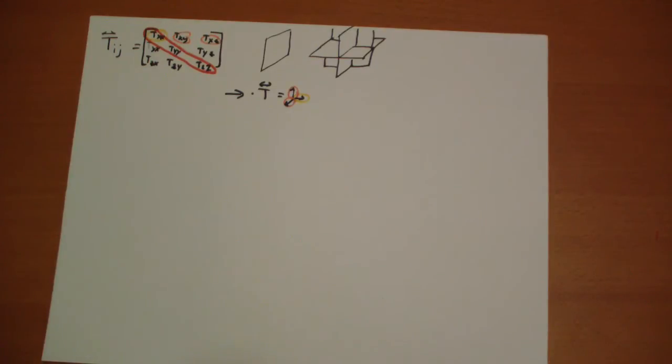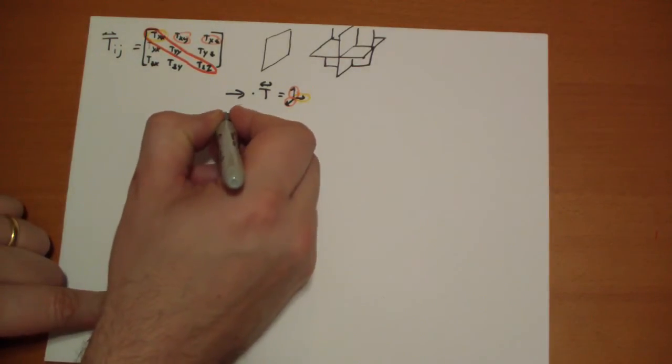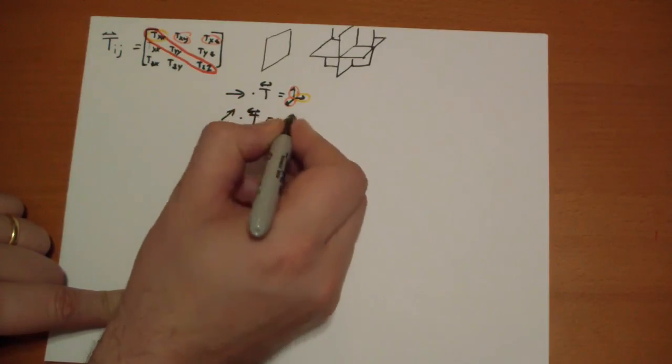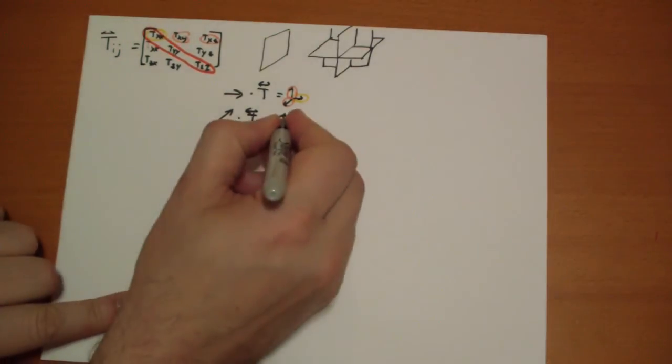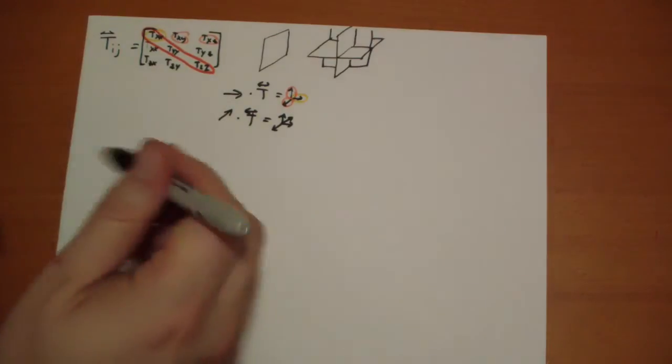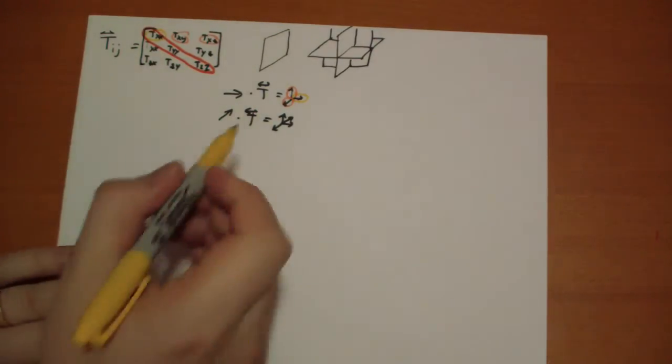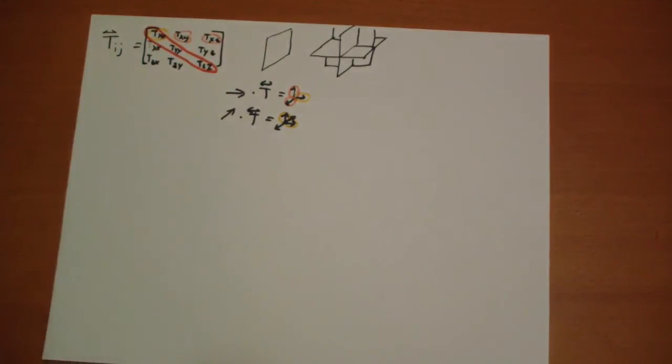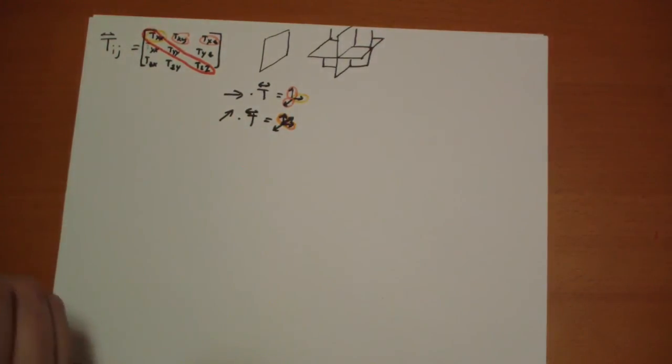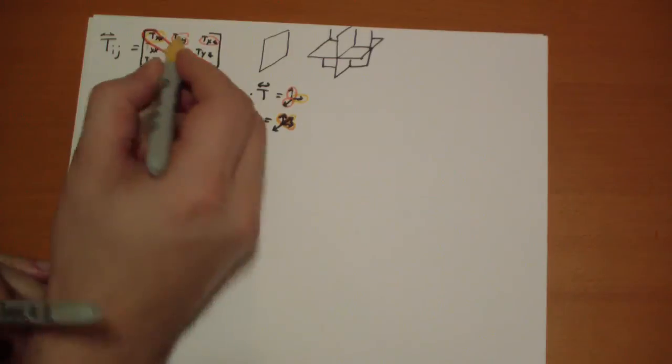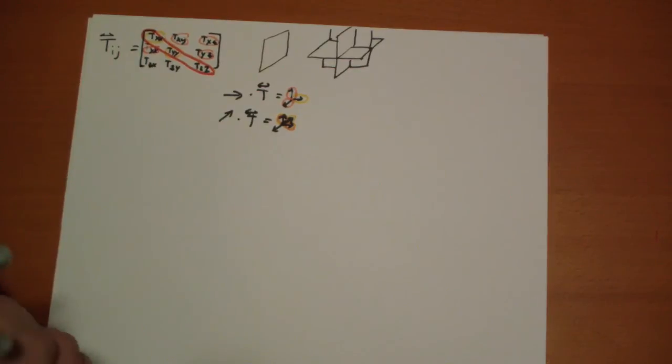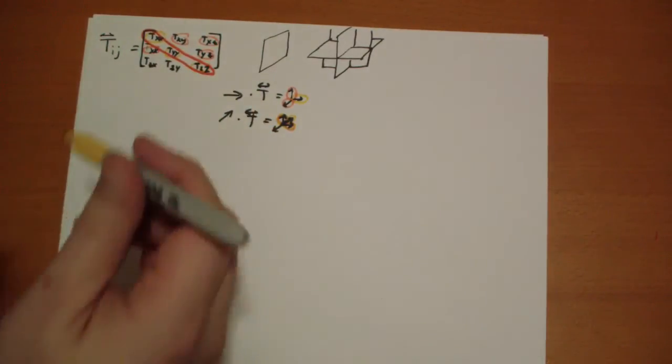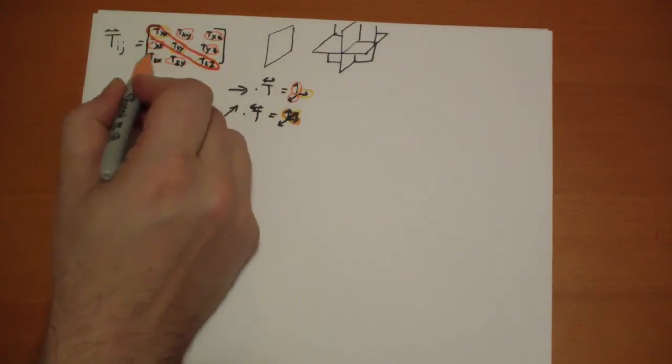Now if I took another vector, say a vector pointing in the y direction, again I'm going to get a vector with three components. Two of these components are perpendicular to the vector you gave it, and one of them is parallel. The parallel is this one, and these two are perpendicular. And the same thing for the z: if you put in a z vector, you get back a parallel term and perpendicular terms.